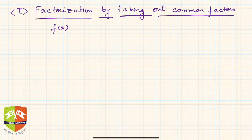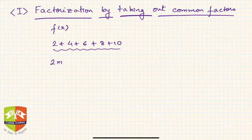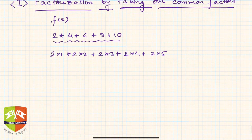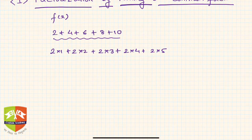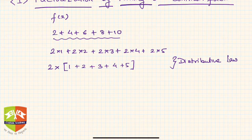What is meant by common factors? Let's set aside algebra for a moment. In arithmetic, if we have 2 + 4 + 6 + 8 + 10, all these numbers are even, so 2 is a factor of each. We can write it as 2×1 + 2×2 + 2×3 + 2×4 + 2×5. All five terms carry a factor of 2, so we take out 2 as common, giving 2(1 + 2 + 3 + 4 + 5). This is the reverse of the distributive law.